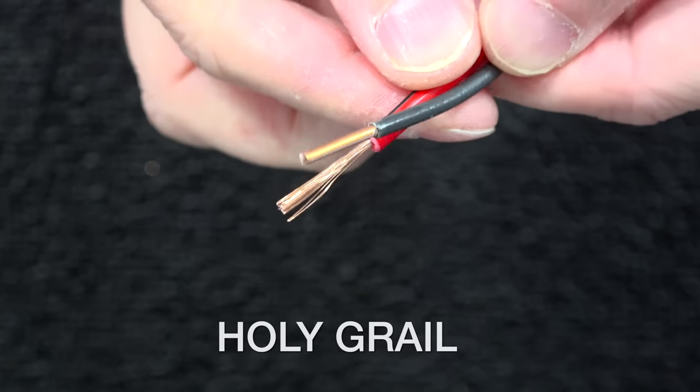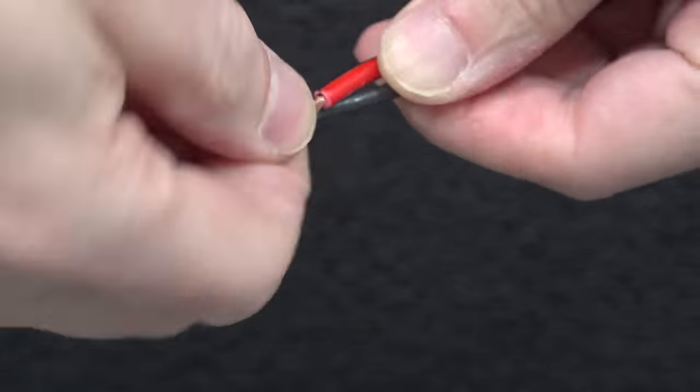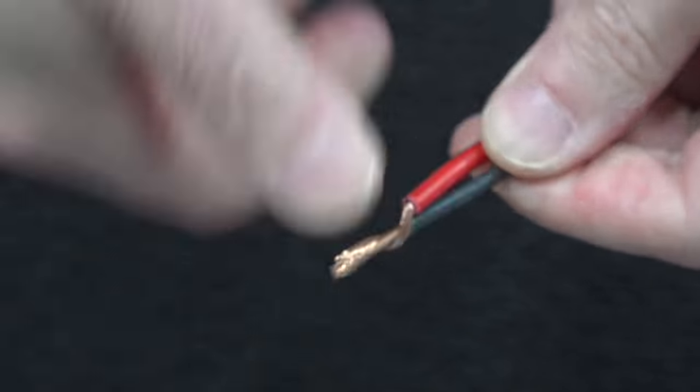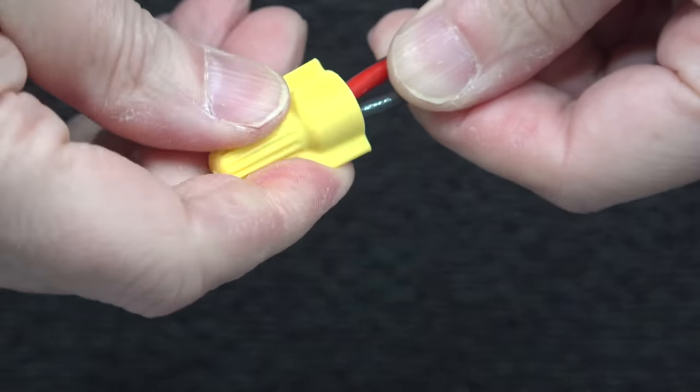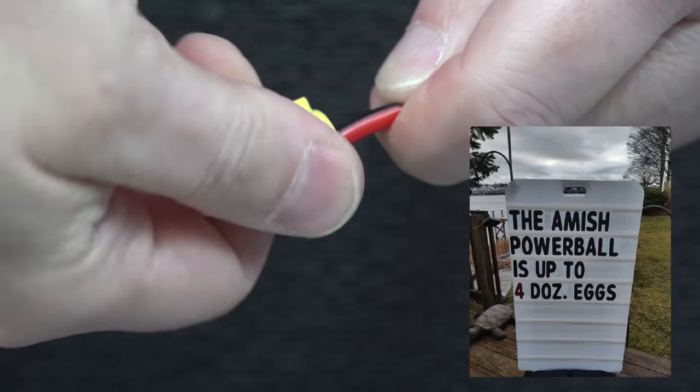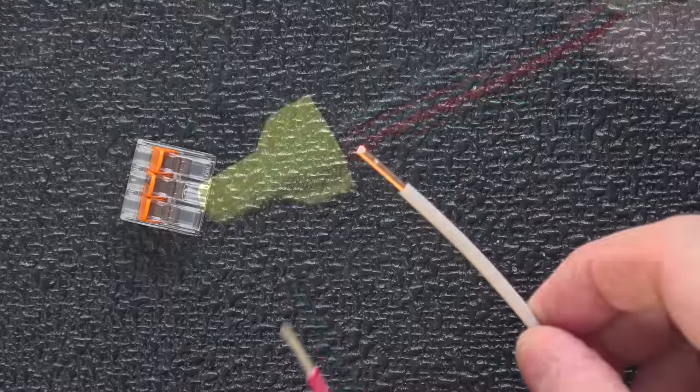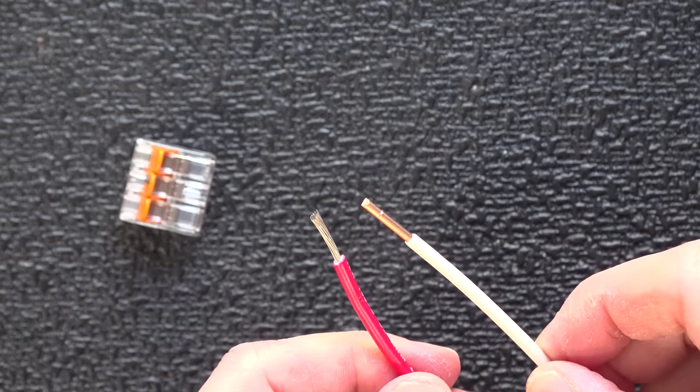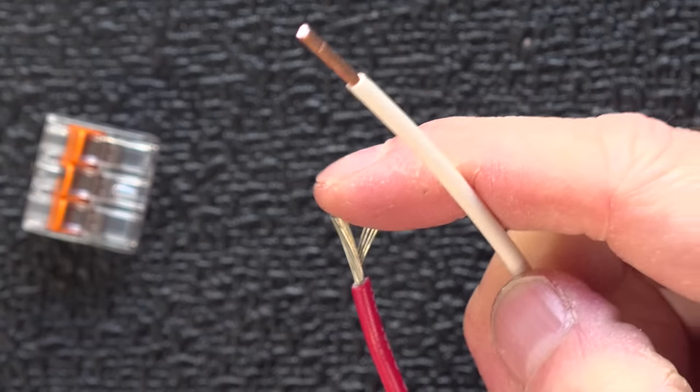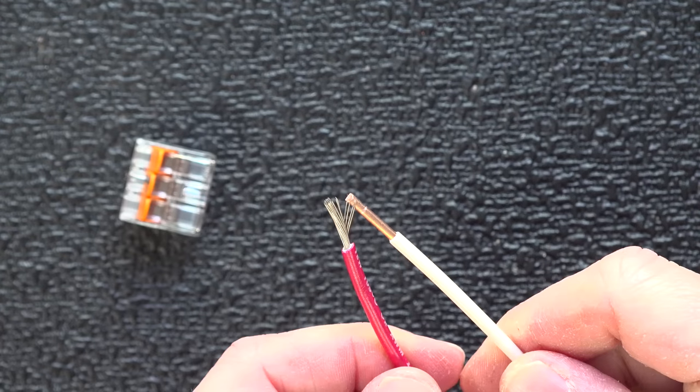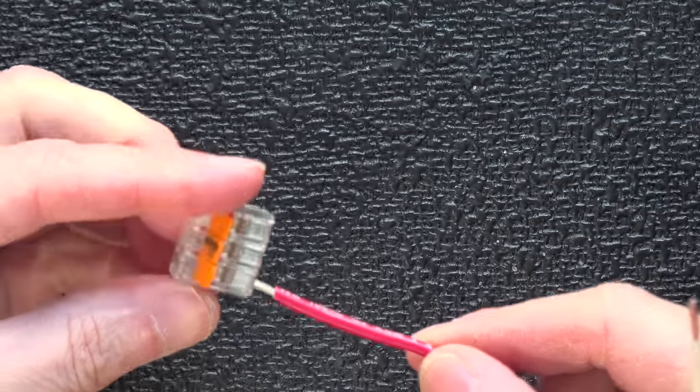And don't forget about the holy grail of electrical connections: mixing stranded and solid wire together. If you've ever tried that with a wire nut, it's kind of like playing the lottery. It might work, or maybe it'll just let go at the worst possible moment. With Wagos, that problem is eliminated completely. You can mix stranded and solid wire. It makes no difference. You'll get a perfect connection every single time.